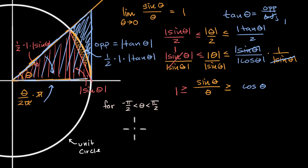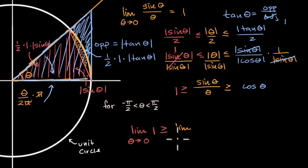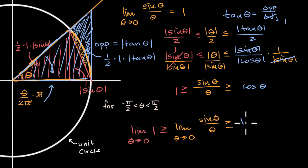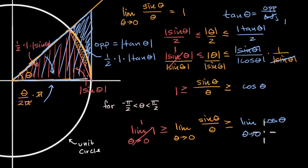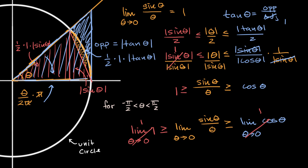By the squeeze theorem: the limit as theta approaches zero of one is greater than or equal to the limit as theta approaches zero of sine of theta over theta, which is greater than or equal to the limit as theta approaches zero of cosine of theta. The first limit is clearly one. The limit of cosine of theta as theta approaches zero is also one, since cosine is continuous and cosine of zero equals one. So sine of theta over theta is squeezed between one and one — therefore the limit equals one. And we are done.